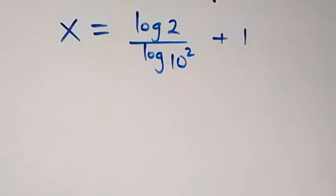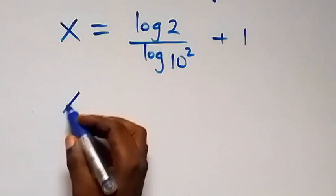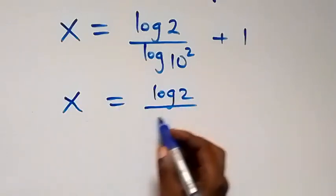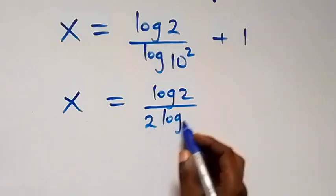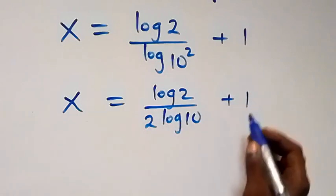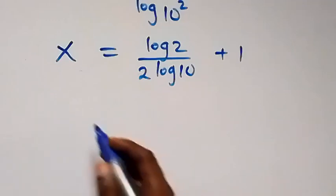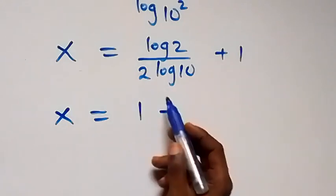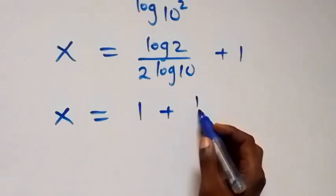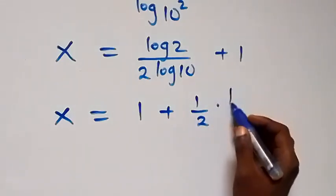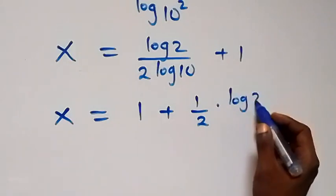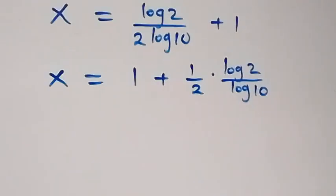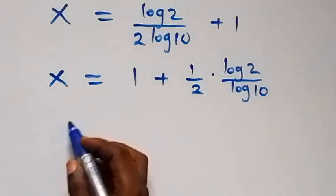Applying the power law again, this gives us x equals log(2) over 2·log(10), plus 1. Since log(10) equals 1, this simplifies so we can write 1 plus one half times log(2).